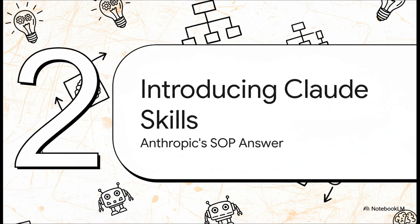Okay, so that's the theory. Now let's look at how this whole concept is actually turning into a real world product. A company called Anthropic has taken this exact idea and baked it right into their AI model, Claude. And they're calling this new feature skills.